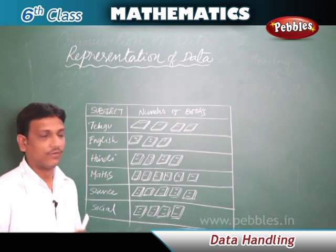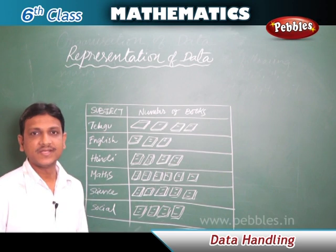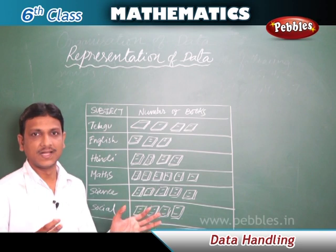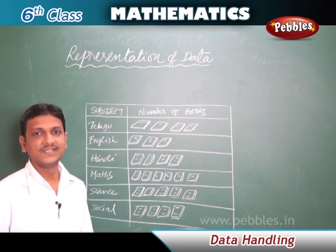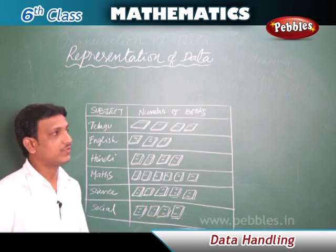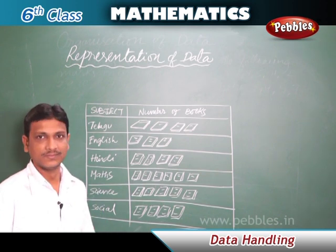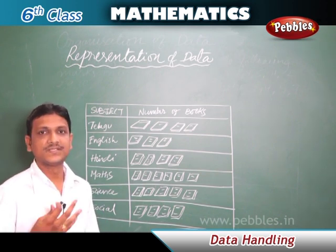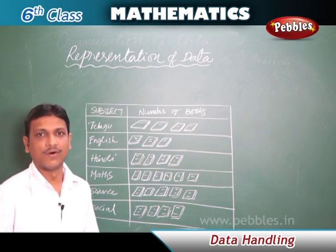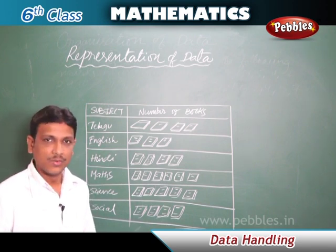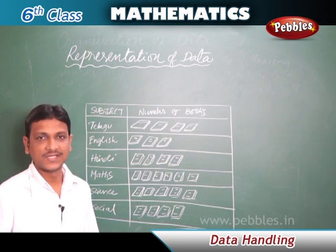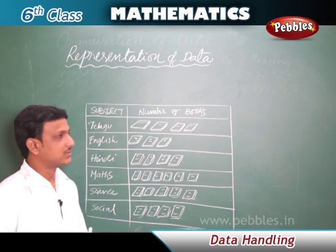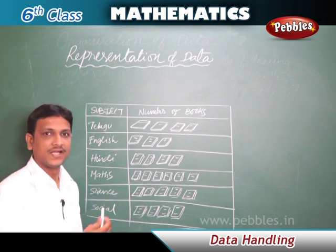Now we will see how to represent data in a better, more convenient form. We already learned about the frequency distribution table. Data can also be represented using pictographs and bar graphs. A pictograph is a kind of table in which we use pictures to represent the data.